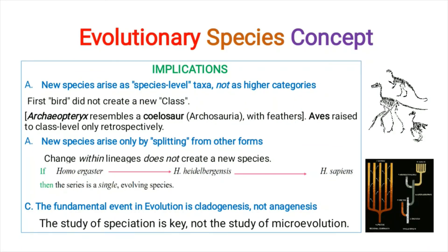A fundamental event in evolution is cladogenesis, not anogenesis. As previously discussed, cladogenesis — the splitting of lineages — creates new species, but changes within a single lineage do not create new species. The study of speciation is key, not the study of micro-evolution. According to the evolutionary species concept, the fundamental event behind the formation of a species is cladogenesis. Micro-evolution is basically anogenesis — a change in the frequency of genes with the passage of time.